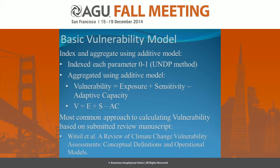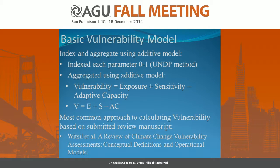I chose the most common methods that have been used for assessing vulnerability to climate change. We indexed each parameter from zero to one, which is the most common indexing method that's been used. Then we aggregated our variables using an additive model, where vulnerability equals exposure plus sensitivity minus adaptive capacity. Adaptive capacity is just different directionally than the others — that's why it's minus instead of plus.